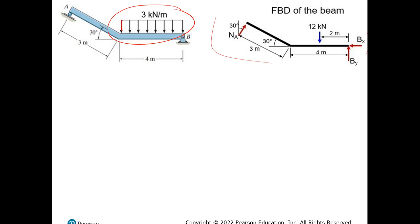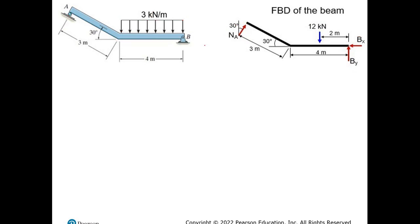From the rectangular distributed load: base times height = 4 × 3 kN/m = 12 kN, placed at the midpoint. So instead of the distributed load, we now have a single 12 kN load, making calculations easier. We also have a normal force at B because there's surface contact. Then we have the supported loads at A giving components AY and AX.